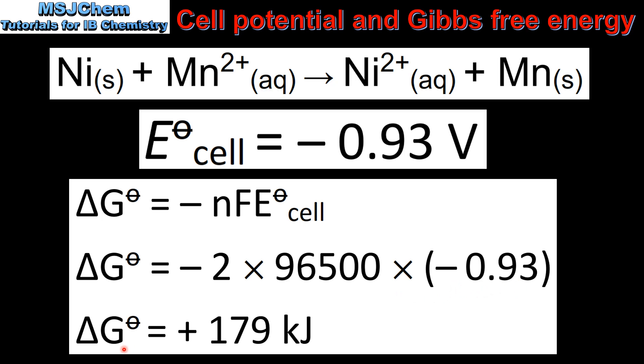This gives us a change in Gibbs free energy of positive 179 kilojoules. A positive value for the Gibbs free energy indicates the reaction is non-spontaneous.